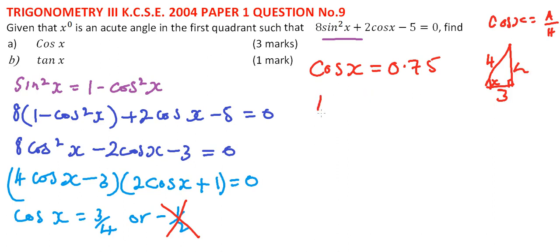h equals the square root of 4² - 3², which is √7. Now that we have the opposite side, we can get the tangent required in part b of the question.